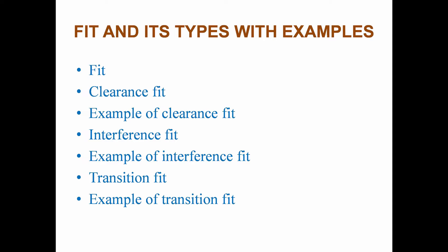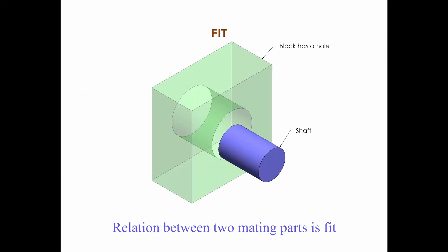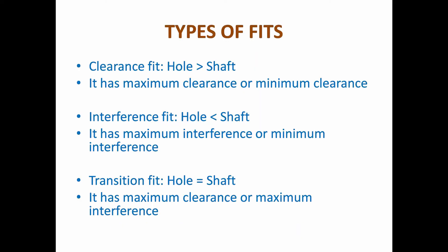From session 2, the list of points we are going to cover are: fit, clearance fit with example, interference fit with example, and transition fit with example. Fit is defined as the relation between two mating parts — the degree of tightness and looseness between two assembled components.